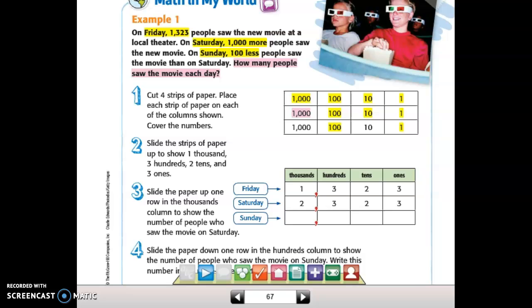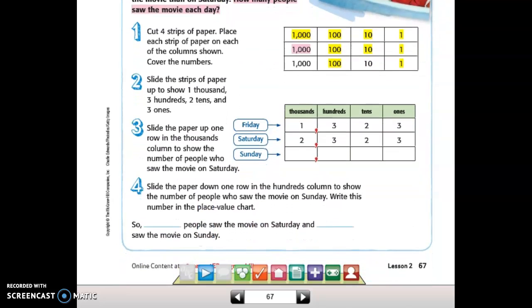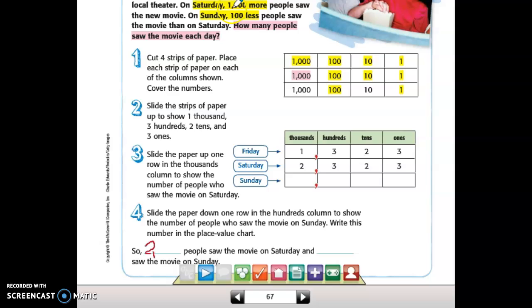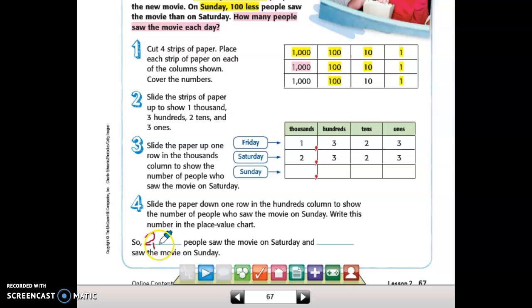So we've got 1,000 more people, and I'm changing the color to show that it's a different day. So now on Saturday we have, instead of having 1,000, we have 2,000 people. And the rest of the numbers didn't change because we were only changing one place value, we were only changing the thousands place. So we've still got 323.